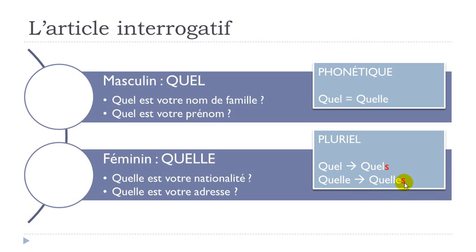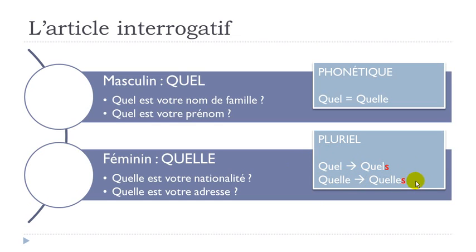Remember that in some cases you will have to make a liaison — a little link between words. If the word, verb, or whatever comes after is starting with a vowel, you will have to make that link. But when pronounced on their own, all four forms — QUEL, QUELS, QUELLE, QUELLES — sound the same: QUEL.